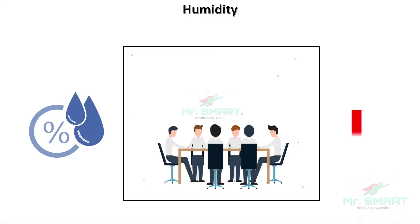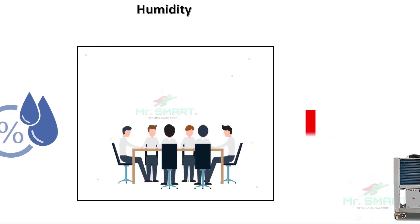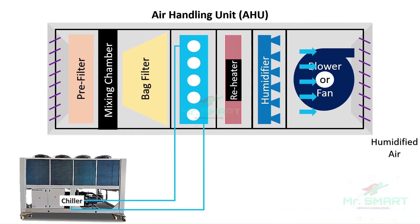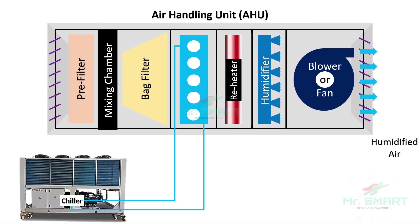What happens if humidity goes below this level? Due to the lack of moisture in the space, you feel dry even if it is cold, and it may also result in dehydration. This state is called the dehumidified or dry state, and can be fixed by the AHU through a process called humidification. Humidification is the process of adding moisture to dry air. In the AHU, a specific part called a humidifier sprays a mist of water vapor over the dry air, producing humidified air, which is then circulated inside the space to increase humidity.